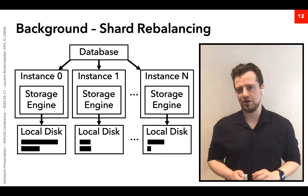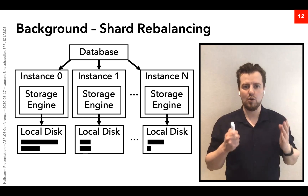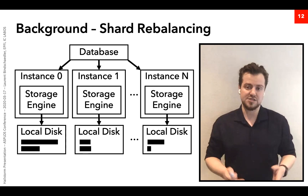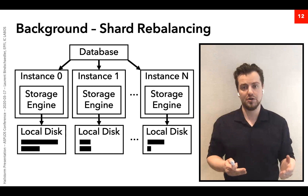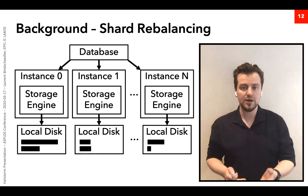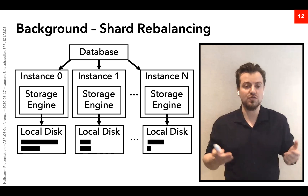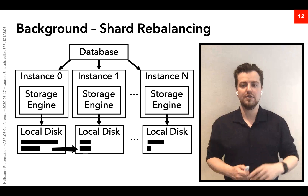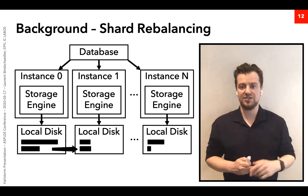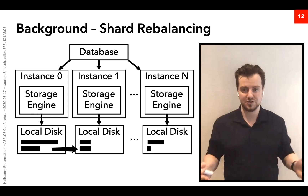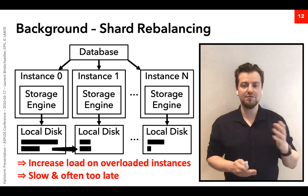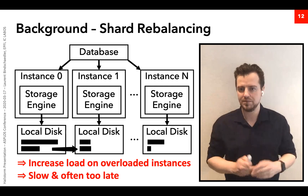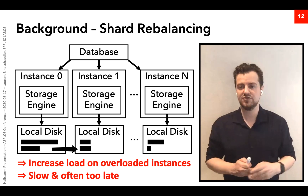Many databases only target the first cause of load imbalance — skew — by supporting shard rebalancing or resharding. Resharding involves migrating entire shards or parts of shards from one instance to another to improve load balance and remove hotspots. However, this often means migrating data off machines that are already overloaded, which increases their load further. It's also often slow and too late to have a meaningful impact.